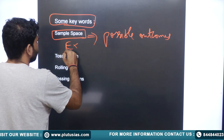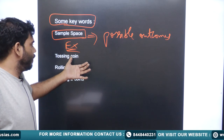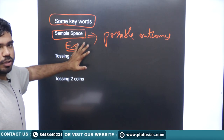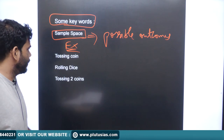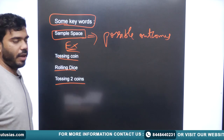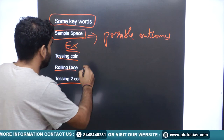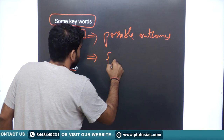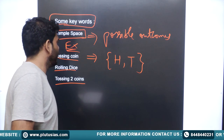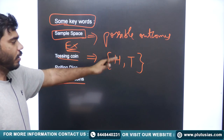For example, we have three different cases on this slide. The first example is tossing a coin. We have either heads or tails. So if we toss the coin, the sample space will be either head or tail — two possible outcomes.